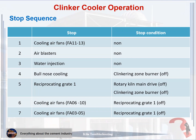Step 5: Stop reciprocating grate 1. Stop condition: rotary kiln main drive off, clinkering zone burner off. Step 6: Stop cooling air fans FA06-10. Stop condition: reciprocating grate 1 off.